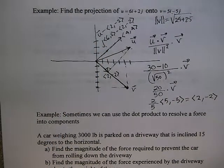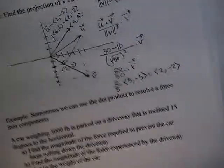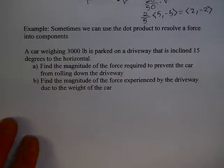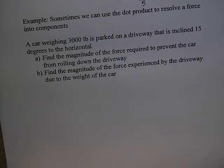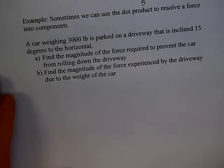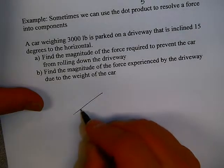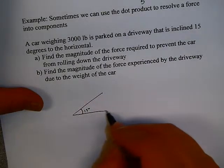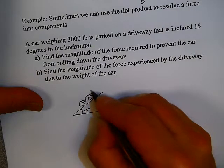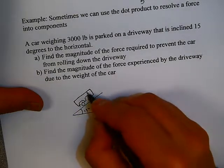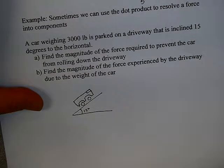That's a little bit about the dot product and some of its operations. Here's a classic example of using a force resolved into components. A car weighing 3,000 pounds is parked on a driveway inclined 15 degrees to the horizontal. We want to find the magnitude of the force holding it in place. The weight due to gravity is represented by the vector negative 3,000 j, going straight down.